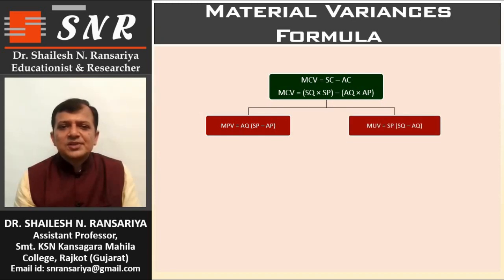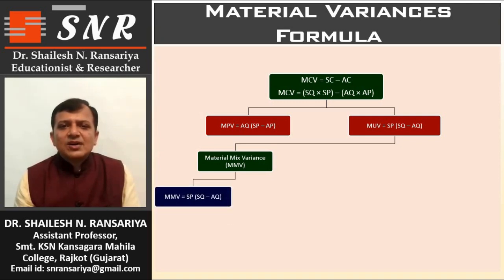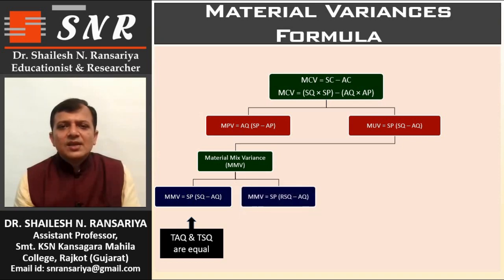Material Usage Variance, also known as Material Quantity Variance: MUV = SP × (SQ − AQ). We subtract actual quantity from standard quantity and multiply by standard price. Under MUV, there are three variances. For Material Mix Variance, MMV, there are two formulas. The first formula is MMV = SP × (SQ − AQ), which is the same as MUV. The second formula is MMV = SP × (RSQ − AQ).